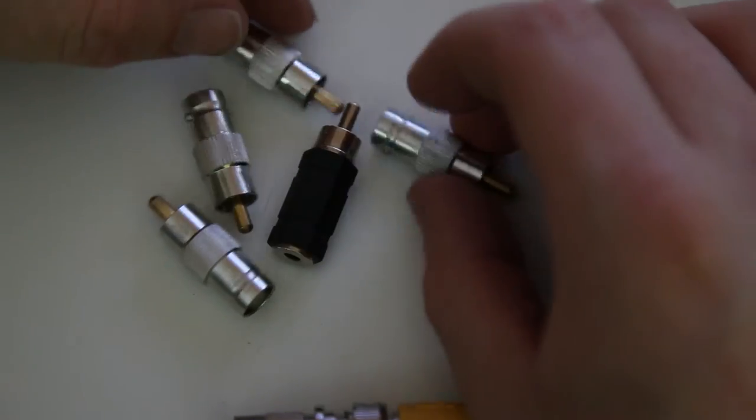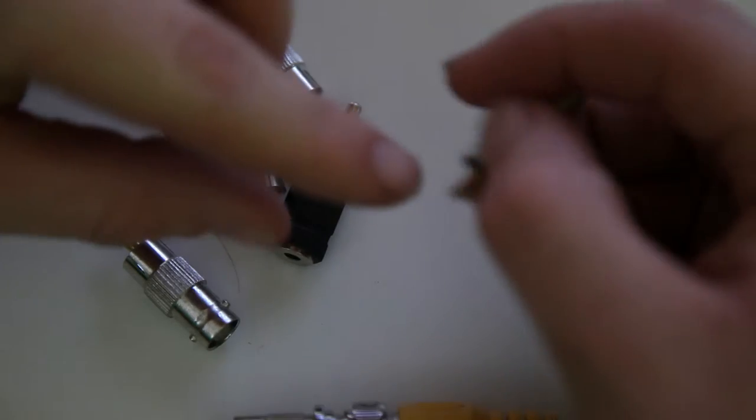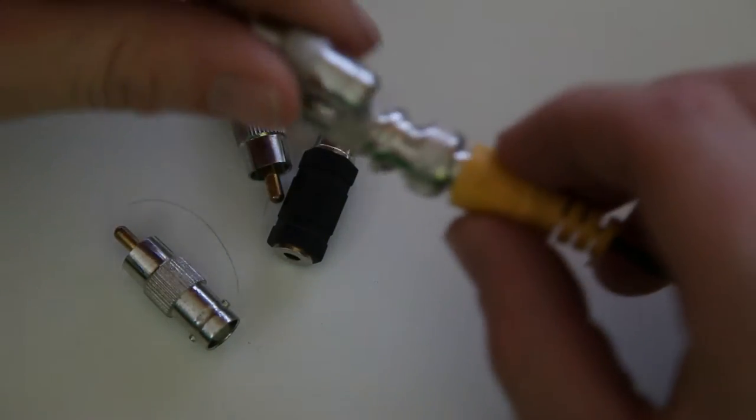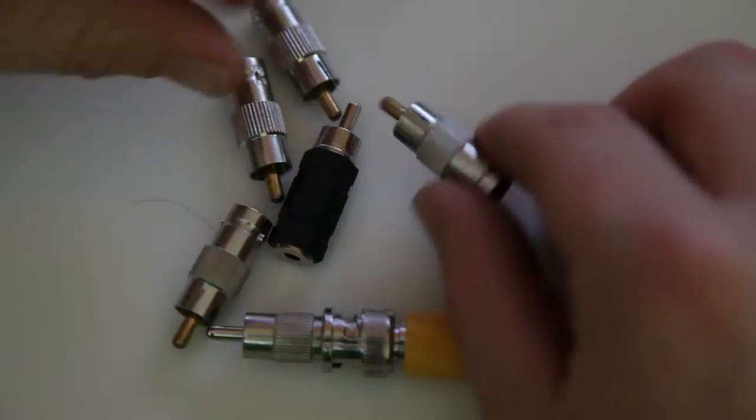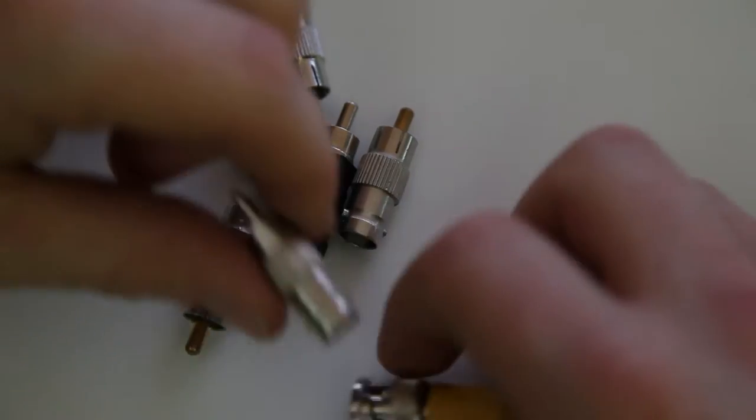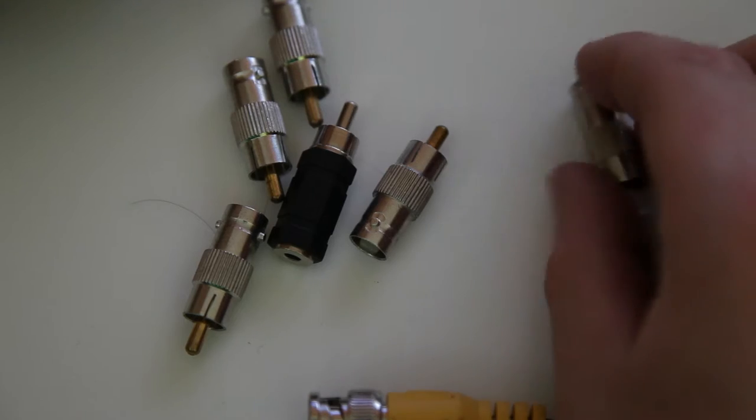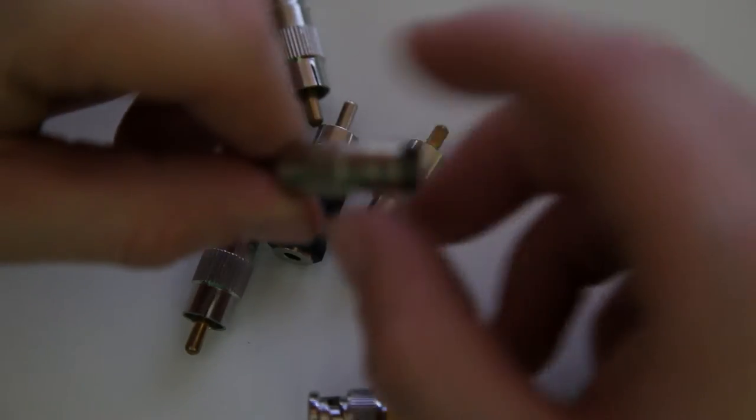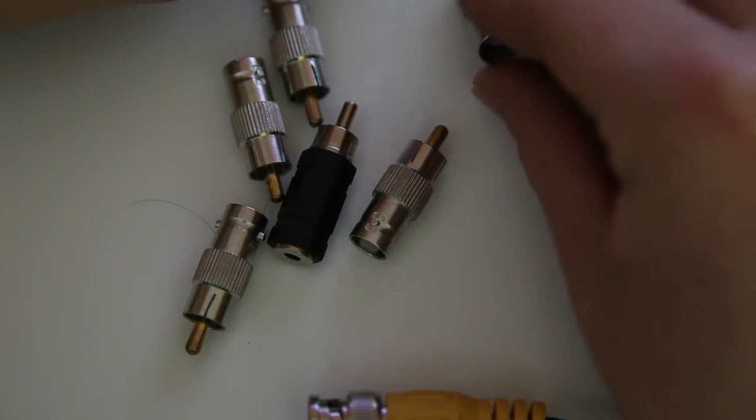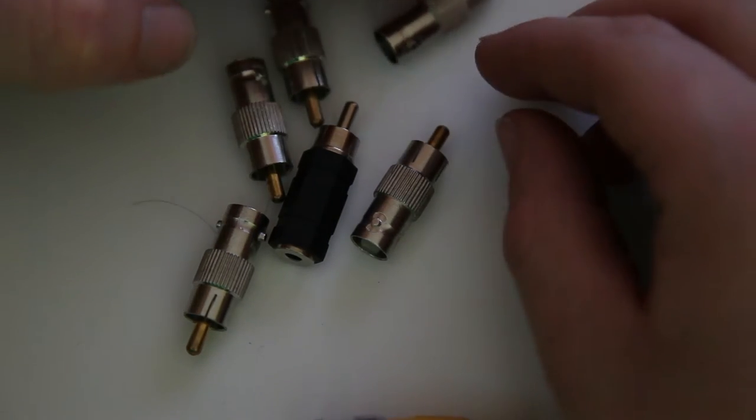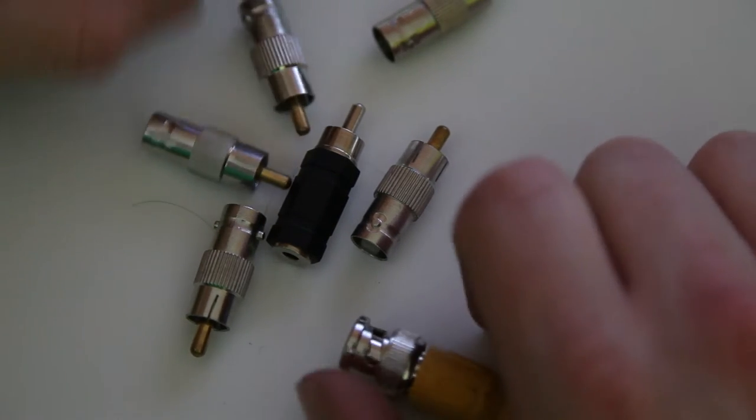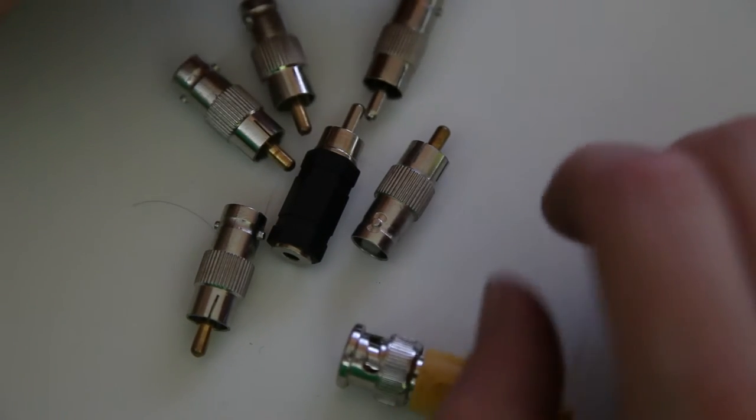But you can get loads of different types connected to these. You can get female to female and then you can just join two big 18-meter BNC cables together. And you can get video splitters so you'll have like two of these, so you connect two cables to one camera. So if you want to put it onto a monitor and then you want to put the other one into your DVR, you can do that. So record and you'll have a monitor of that camera.